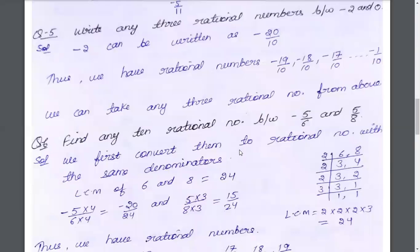If you are asked for more numbers, you can write more, such as minus 1 by 10. We can take any three rational numbers from the range. If you want to write them, you can write other numbers as well.